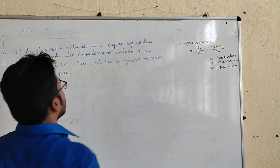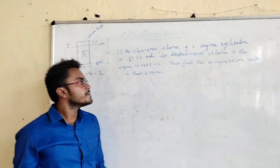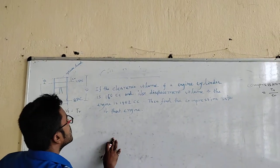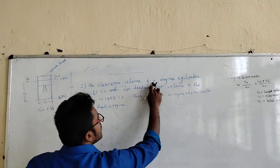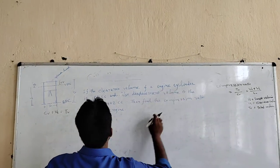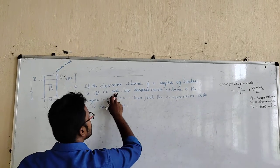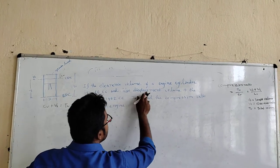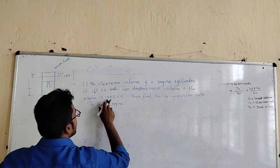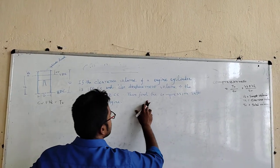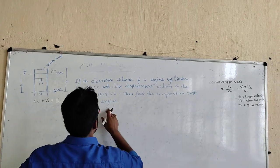We can have a problem here on compression ratio. If the clearance volume of the engine cylinder is 162 cc and the displacement volume of the engine is 1462 cc, then find the compression ratio of that engine.